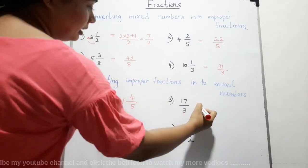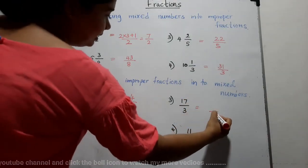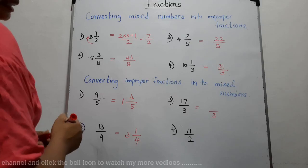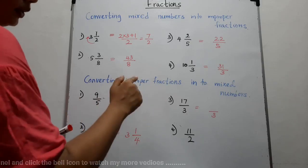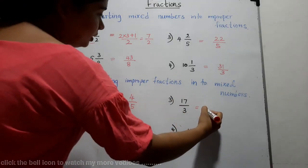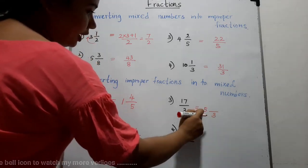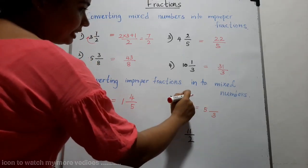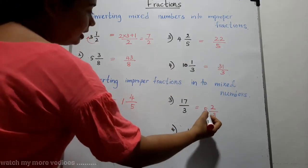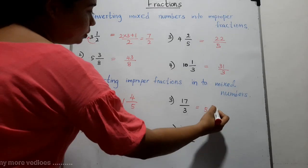Next: seventeen-thirds. Denominator is three. How many threes are there in seventeen? Three into five is fifteen, so there are five threes. To obtain seventeen, we add two. The answer is five and two-thirds.